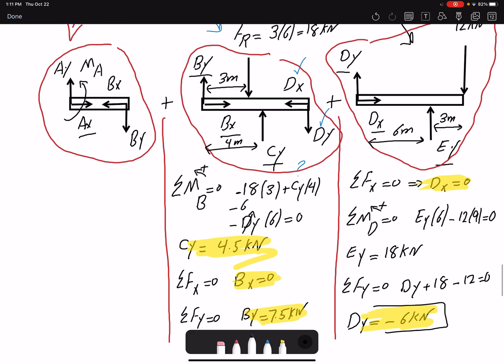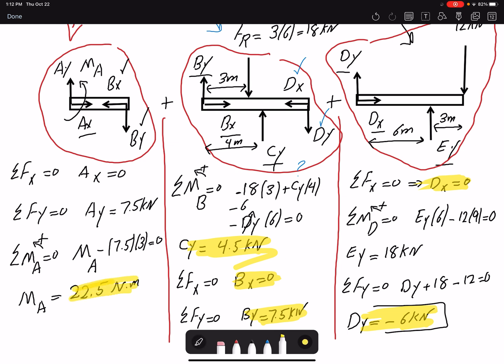Now with the value that I know, if I move to the other free-body diagram, then I can find the rest of values. I solve the summation of forces in X equals zero. Then AX is zero. Summation of forces in Y equals zero. I can find AY to be 7.5 kN. And summation of moment about point A. I assume counterclockwise to be positive. I have the moment MA, which is positive. BY is creating a negative moment. The magnitude is 7.5 kN. Moment arm three equals zero. Therefore MA is 22.5 Nm. So I found all the unknowns using free-body diagrams.